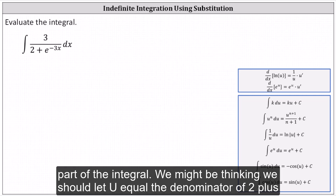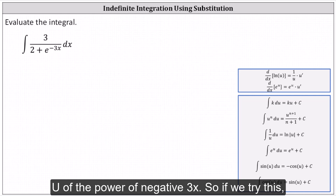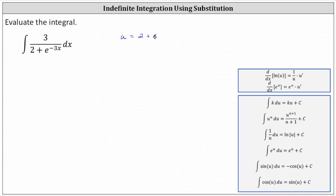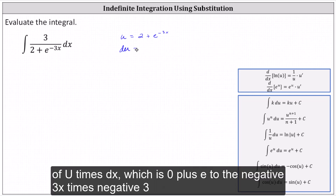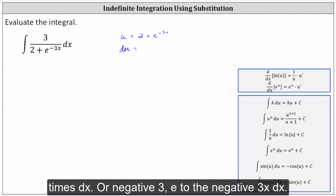We might be thinking we should let u equal the denominator of 2 plus e to the power of negative 3x. So if we try this, the next step would be to determine du, which equals the derivative of u times dx, which is 0 plus e to the negative 3x times negative 3 times dx, or negative 3 e to the negative 3x dx.